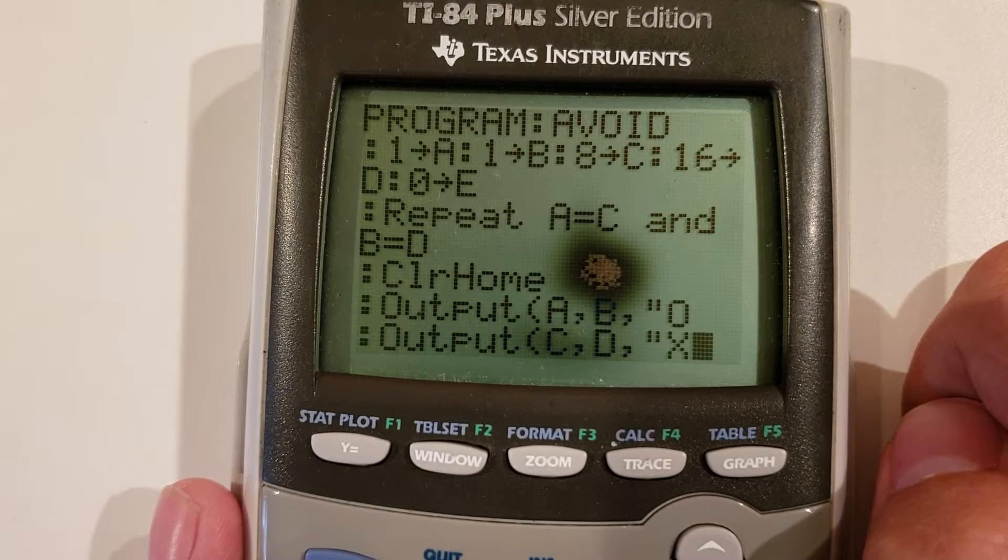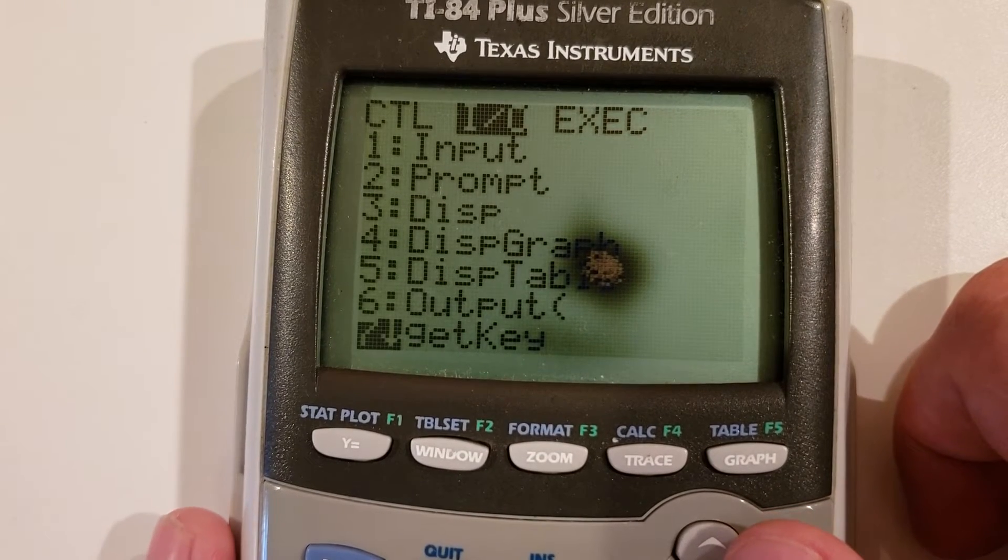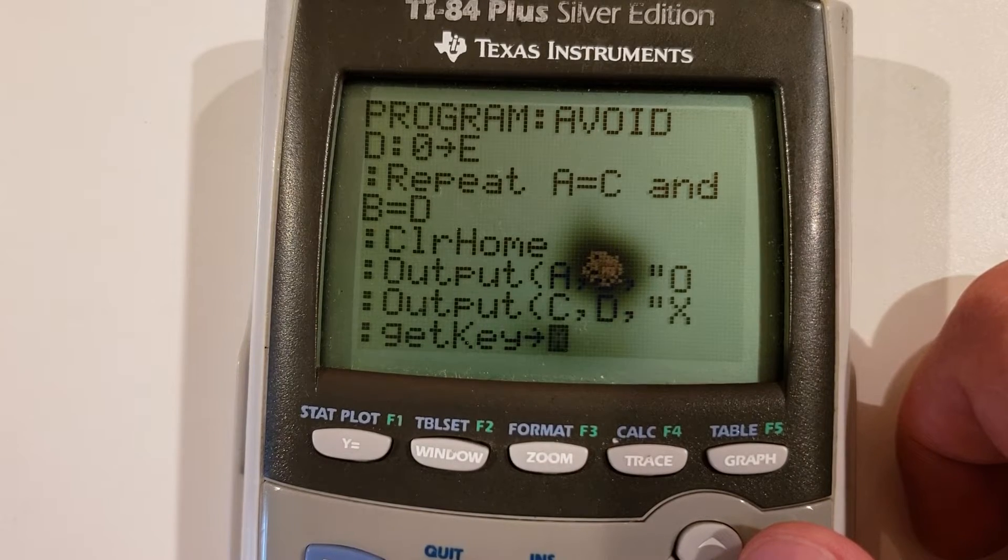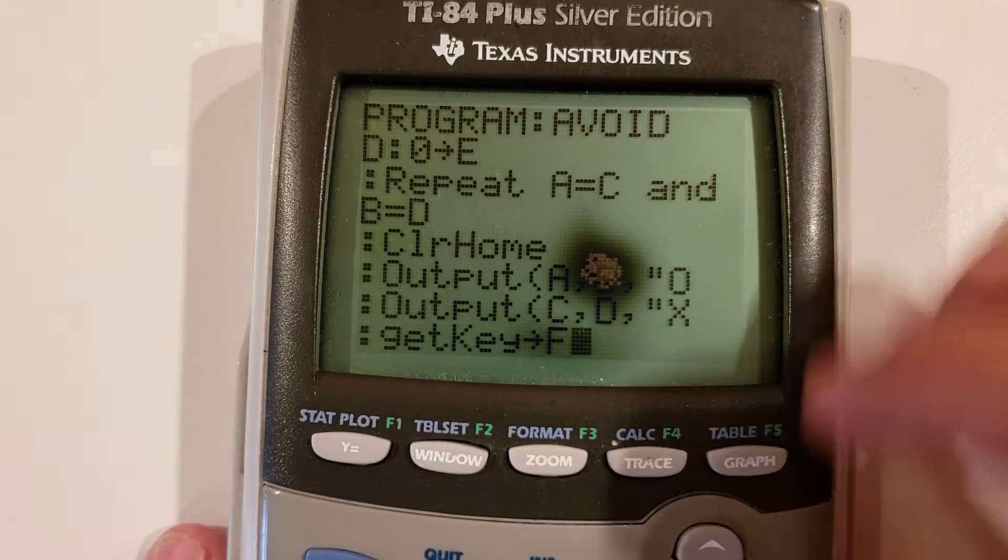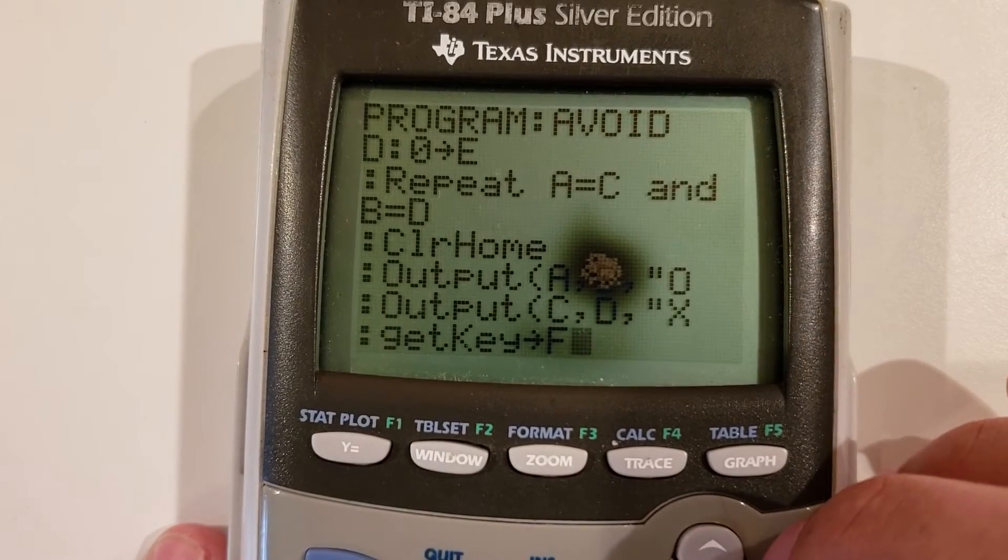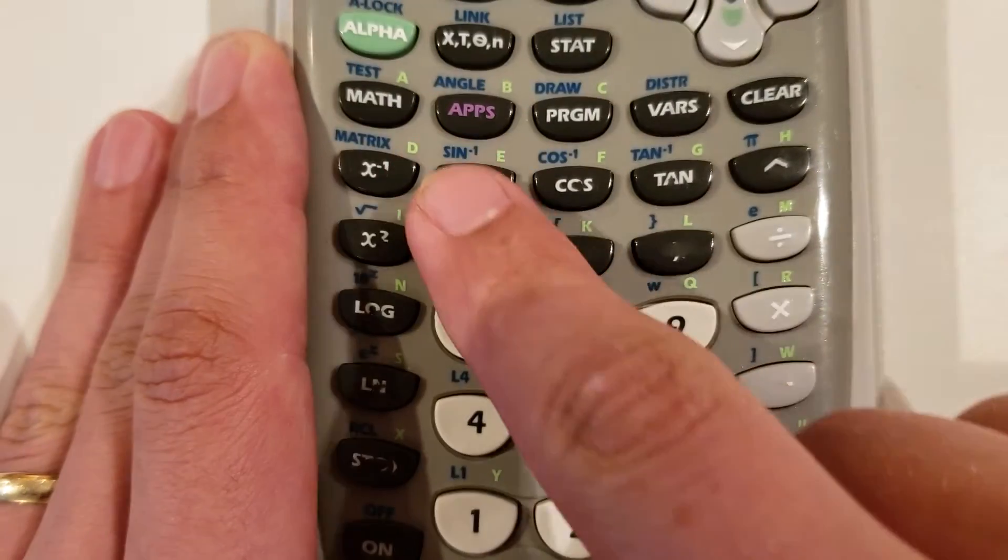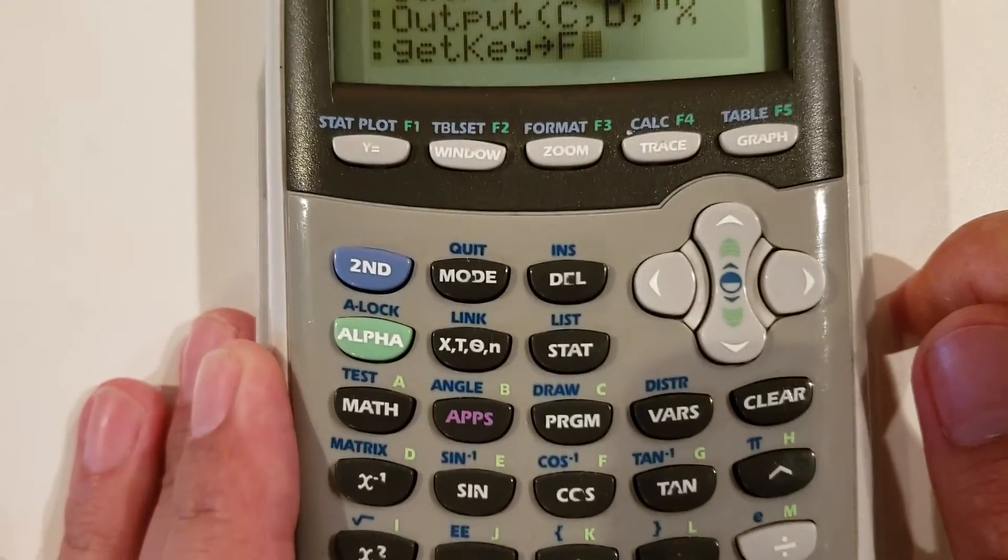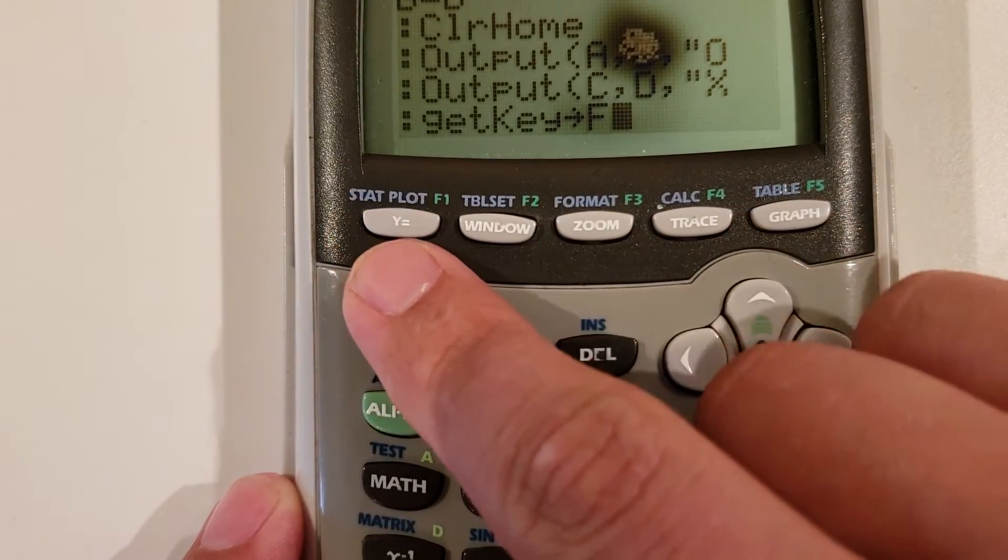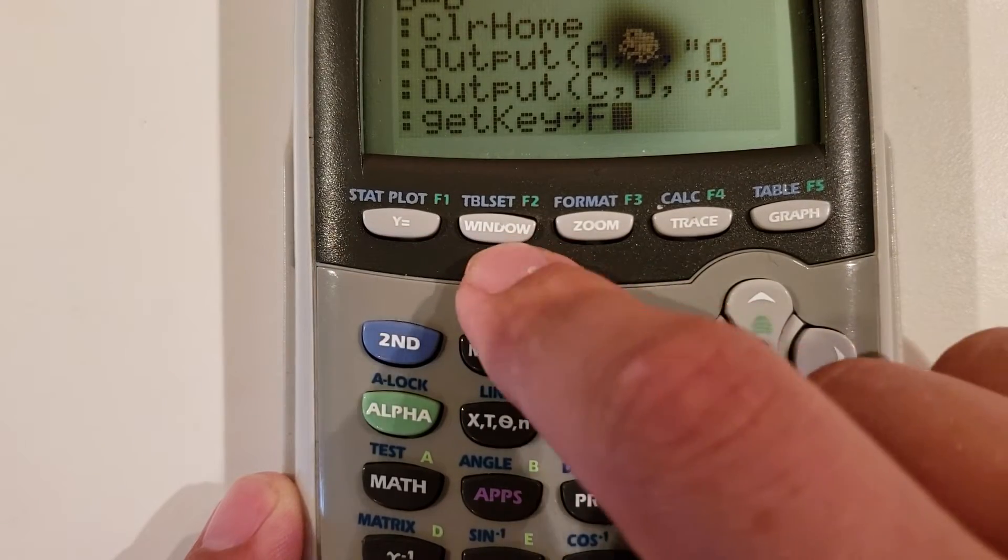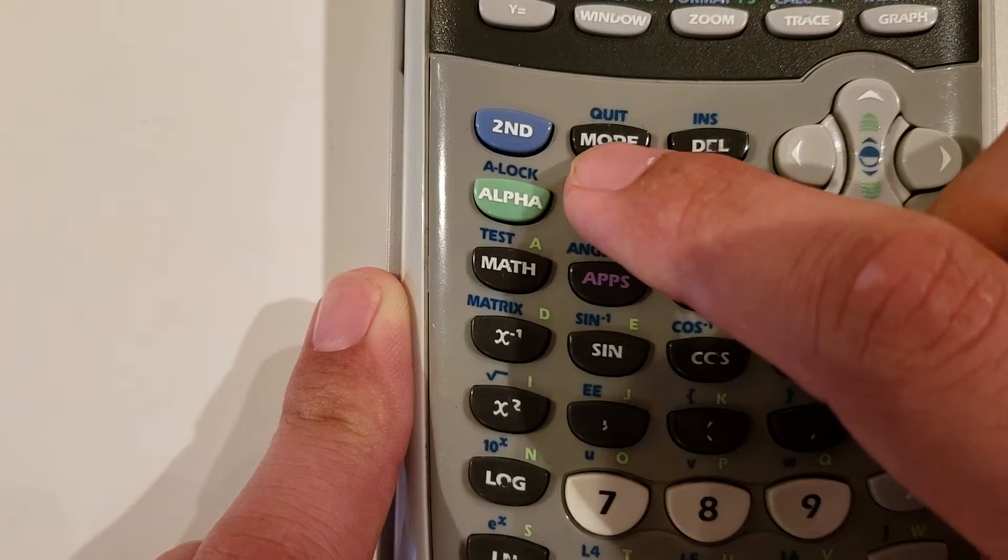After we have our outputs, we are going to use the get key statement. And we'll store that to our last variable. In TI-84 and TI-83 basic, you do not need to initialize variables at the start. The calculator assumes that all of them are initialized and knows what their values are going to be. Get key store F will get input. The calculator will try and wait until someone pushes a button. The number that will be assigned to F is dependent on a grid. Starting at the top left, this is 1-1 or 11. 1-2 will be 12, 13, 14, 15. That means this is 2-1: 21, 22, 23.